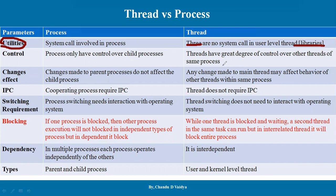The process saves control over the child process — the process only has control over its child process. Whereas a thread has a great degree of control over the other threads of the same process.